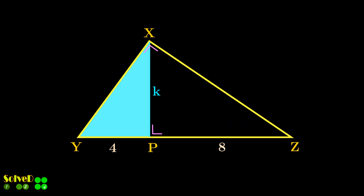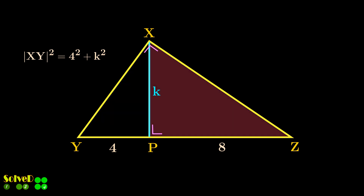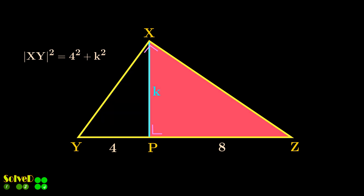Consider the blue triangle. Using the Pythagorean theorem, we can write this equation for XY, as shown. In a similar way, from the pink triangle we get an equation for XZ.